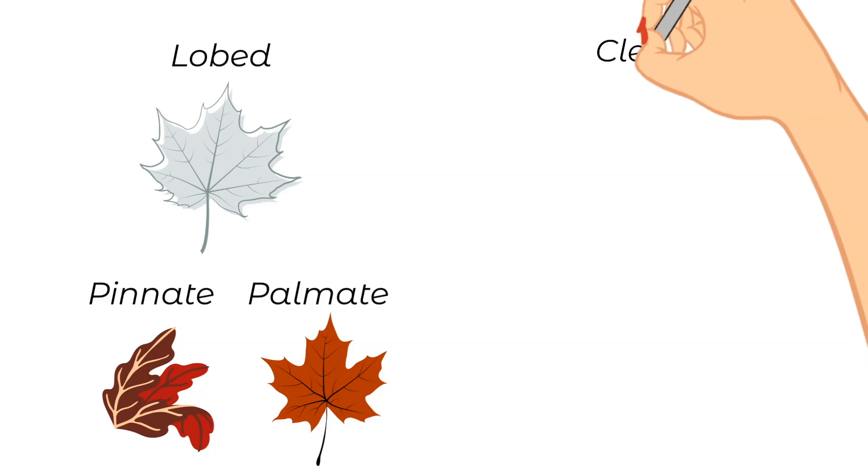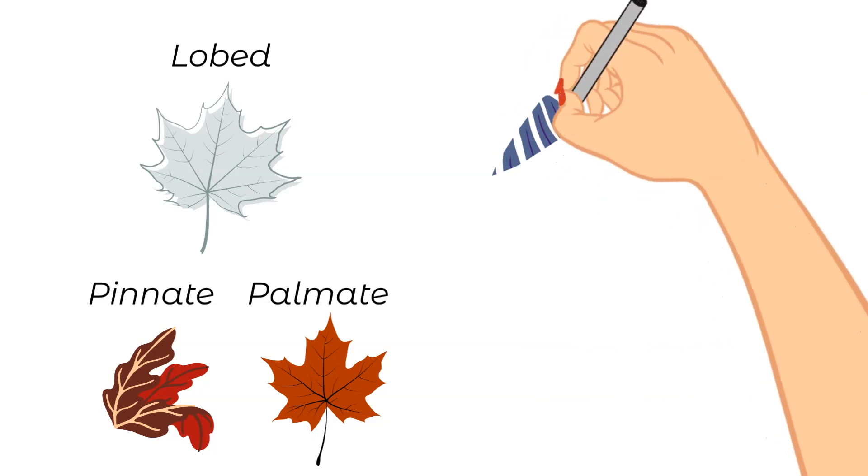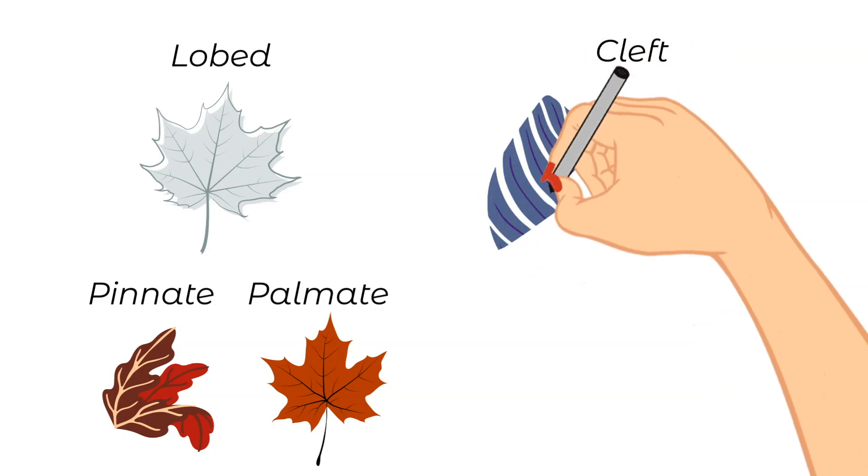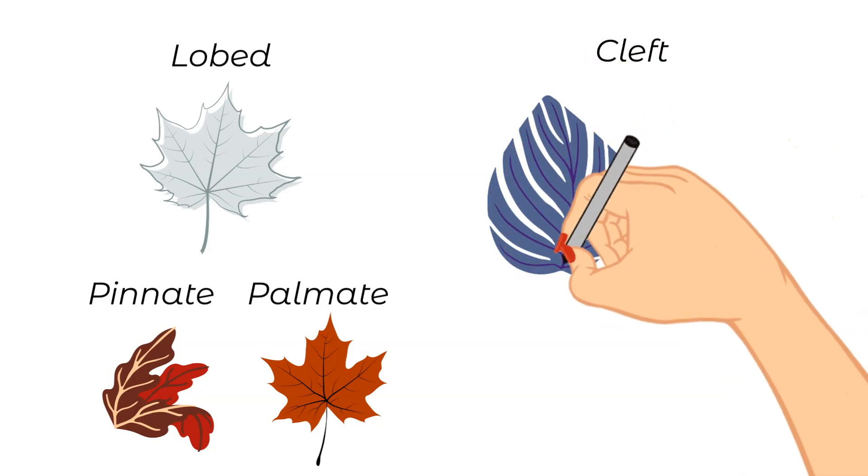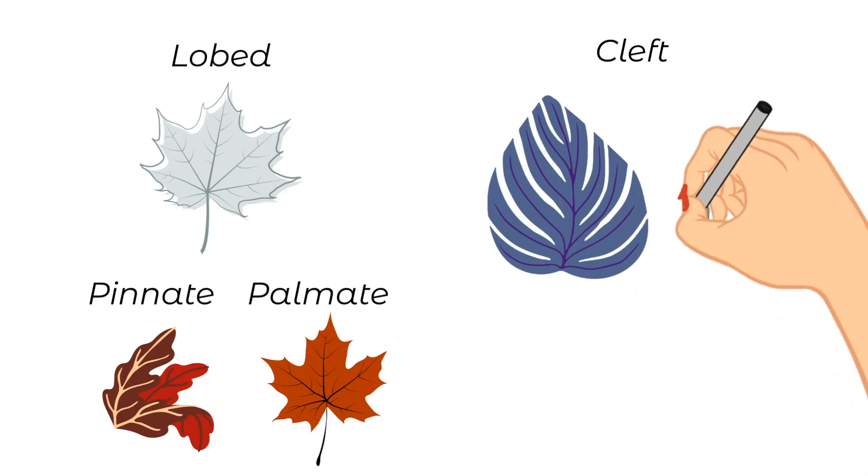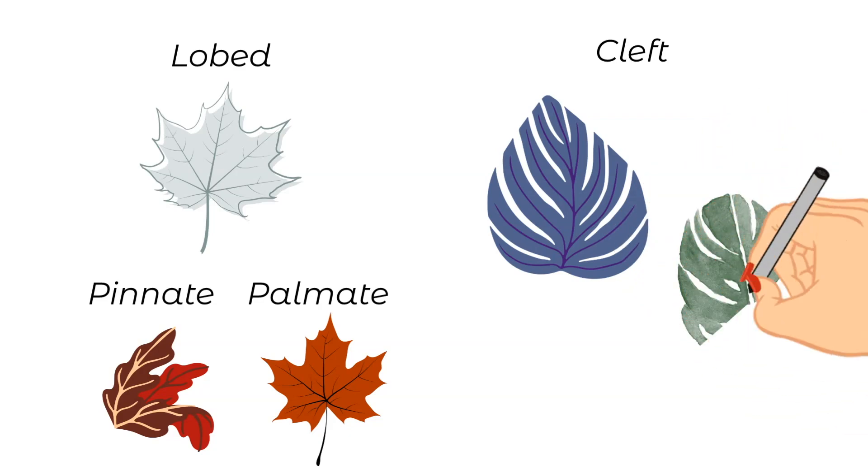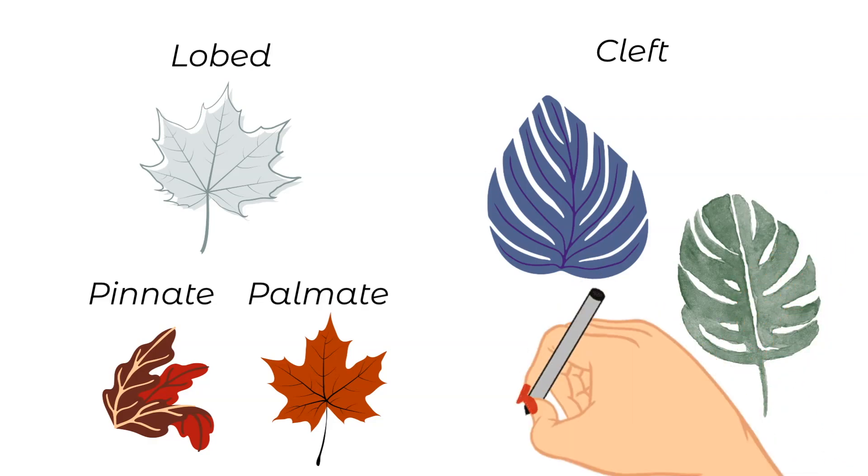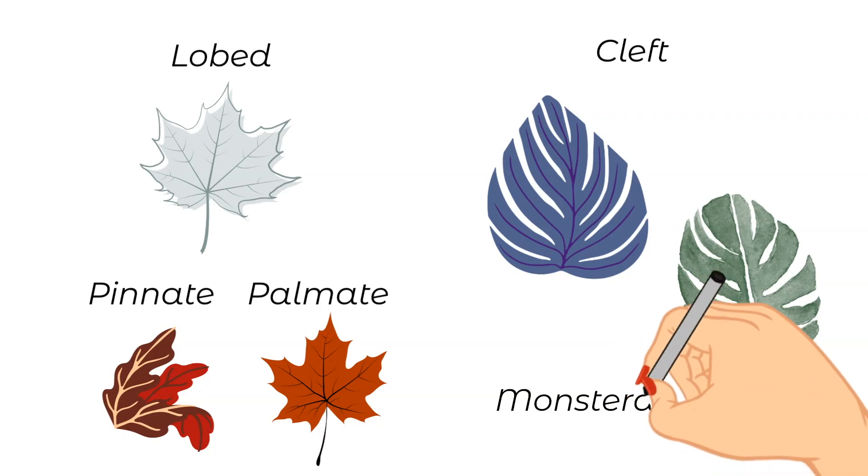Next are the cleft leaves. A cleft leaf is a leaf that has these deep lobes in them and the rule for identifying these types of leaves is that those lobes must be more than halfway to the base or the midrib. An example of a plant with this type of leaves are monsteras.